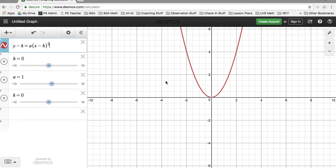All right, so let's take a look at this vertex form, which is y minus k equals a times quantity of x minus h to the second power.